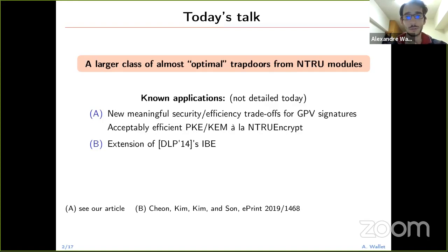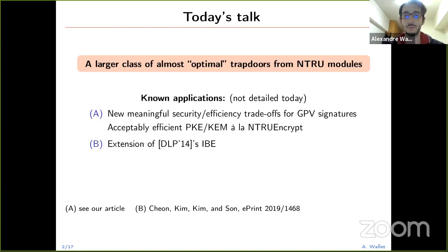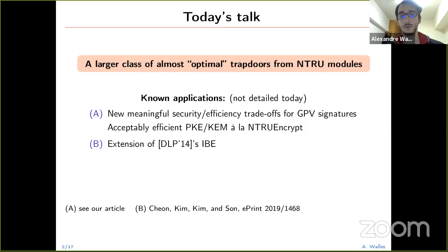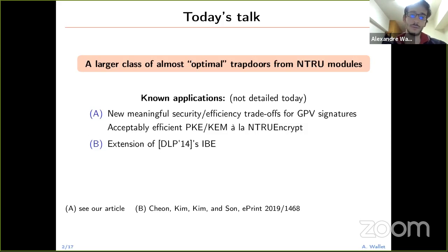We already have some applications with these trapdoors, though I won't go into much detail today. We managed new meaningful security-efficiency trade-offs for GPV-style signatures, and also an acceptably efficient public encryption scheme convertible into a KEM following an NTRU-encrypt style design — acceptably efficient because it's not really better than standard NTRU encryption. There is also a recent preprint by Cheon, Kim, Keen, and Son that uses these same trapdoors to extend the identity-based encryption scheme from Ducas, Lyubashevsky, and Prest.